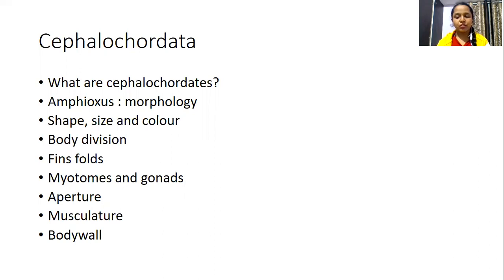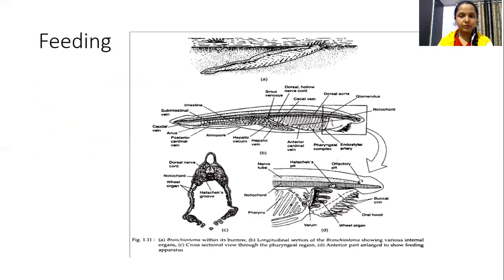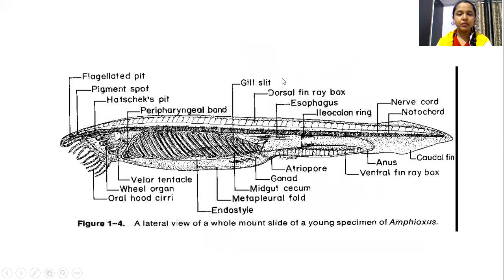We'll discuss the morphology of amphioxus. Amphioxus usually lives in shallow waters. The whole body of the amphioxus will be buried in the sand, whereas only the anterior mouth region, which is on the ventral side of the body, will be projected outward so that it can capture food. The anterior oral side at the ventral side of the body is projected into the water where it can take up its food.